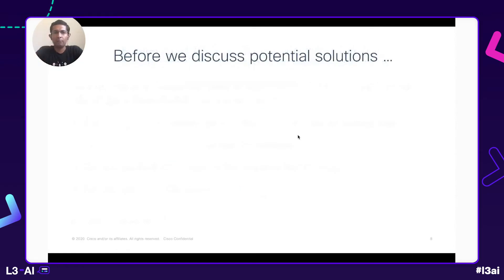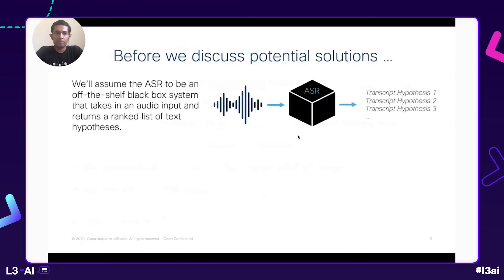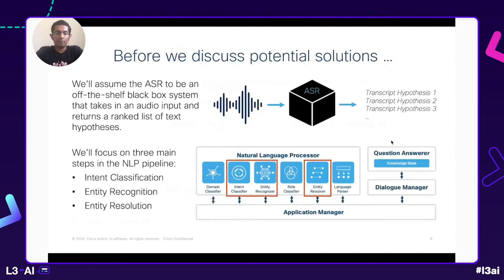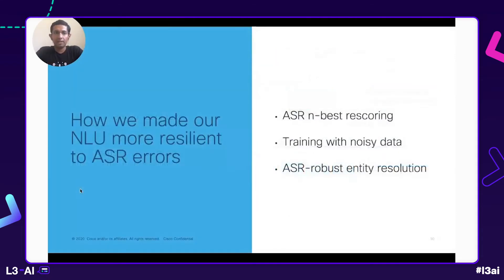Before we discuss the potential solutions, I want to establish a couple of things. First, we'll assume that the ASR we are using is an off-the-shelf black-box system that we can't really modify and have to use as-is. This is a reasonable assumption because most cloud-based ASR service providers today provide very little room for customization. However, we'll at least assume that the ASR can provide not just its most confident transcript, but a ranked list of alternate hypotheses. Second, when talking about the NLU or NLP stack for a voice assistant, we'll be restricting our discussion to the three main steps important for any kind of voice assistant: intent classification, entity recognition, and entity resolution.